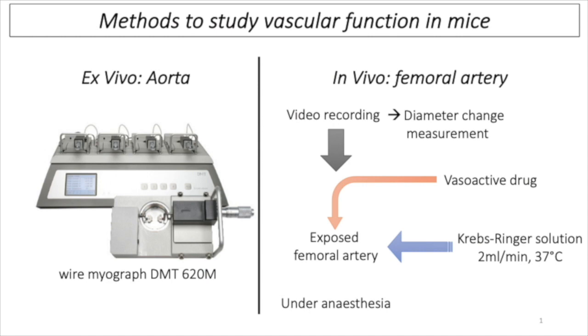The first major finding of our study is the demonstration that JAK2 V617F myeloproliferative neoplasm — which we will refer to as JAK2 mutated myeloproliferative neoplasm — induces a considerable increase in arterial contraction. To study vascular reactivity, we used two kinds of experiments: one ex vivo with aorta using myography to record aortic contraction exposed to vasoactive drugs, and secondly, in vivo, recording femoral artery superfused with vasoactive drugs to measure femoral contraction.